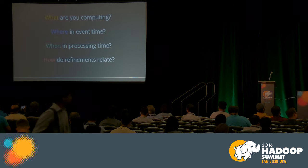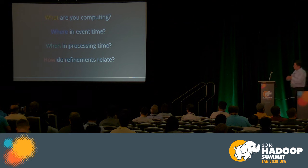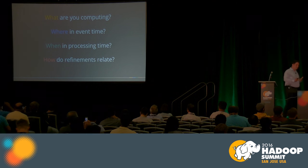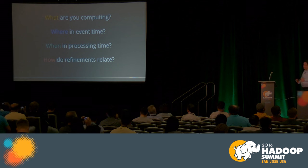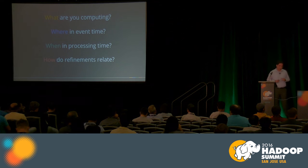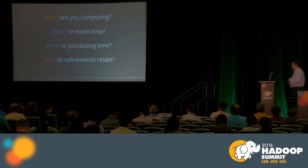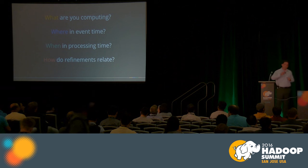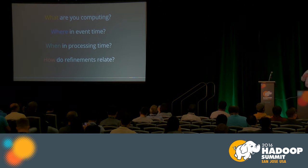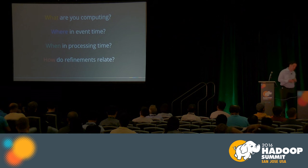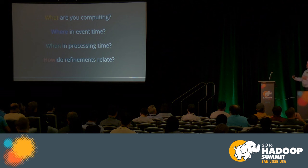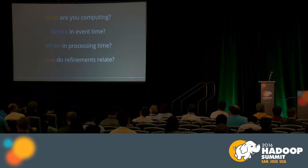When discussing the programming model of Apache Beam, the key is to separate certain considerations into separate APIs. We talk about four different questions. First: what are you computing? This is your business logic — it specifies exactly what your pipeline is doing. We keep this constant across all use cases. Then: where in event time, when in processing time, and how refinements relate over time.